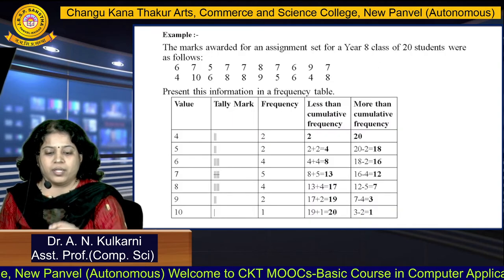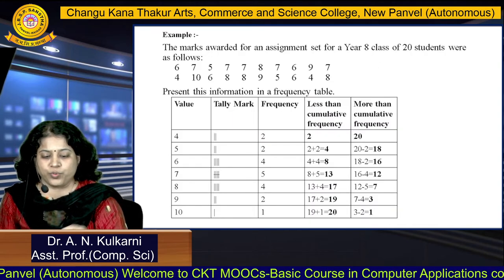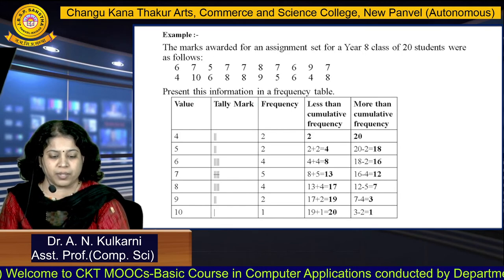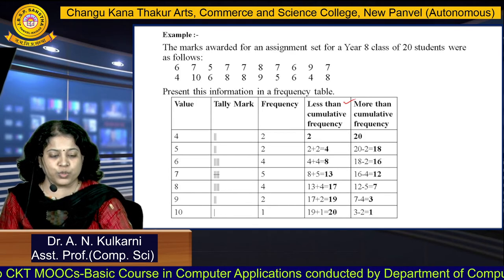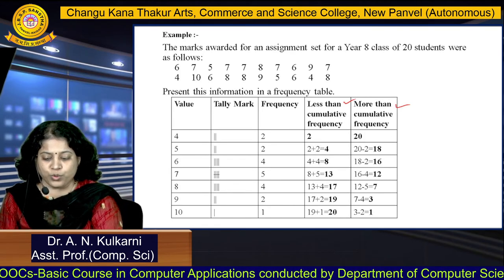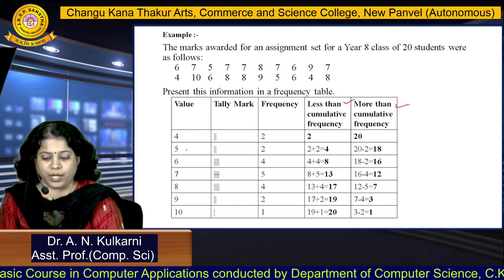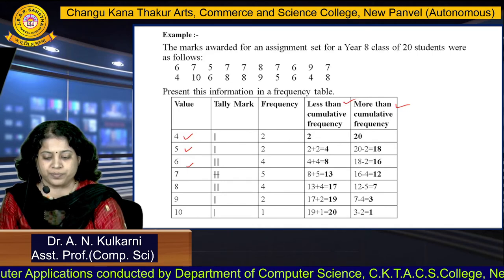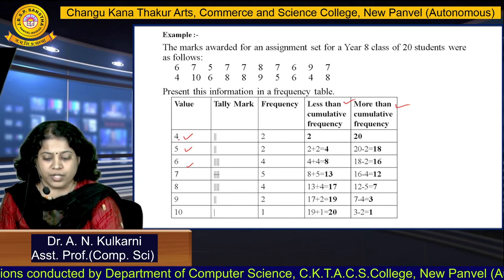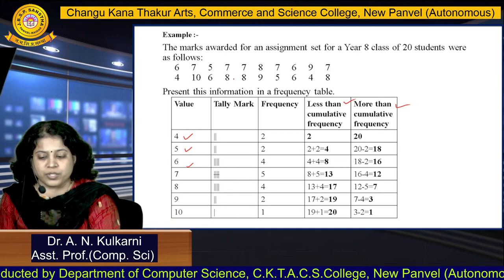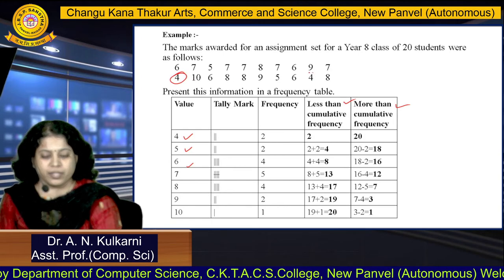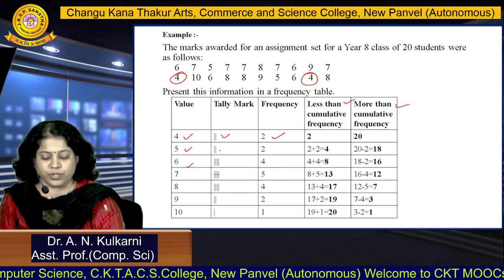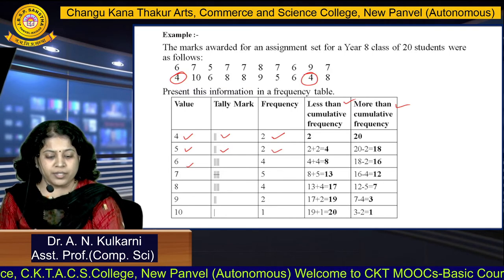Example: marks are given for 20 students. Present this information in a frequency table by calculating less than cumulative and more than cumulative frequencies. The marks are arranged in ascending order up to 10 distinct values. Tally marks are assigned — for example, the value 4 appears 2 times, so tally marks are 2 and frequency is 2. Similarly for value 5, the frequency is 2.